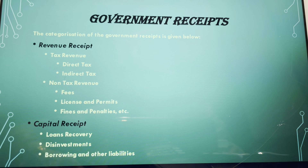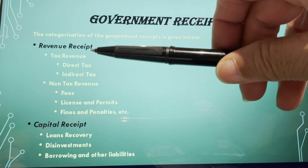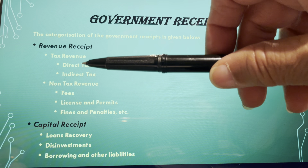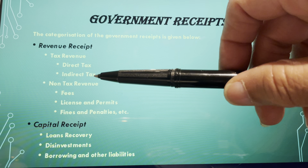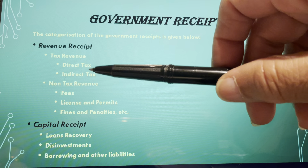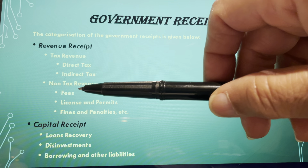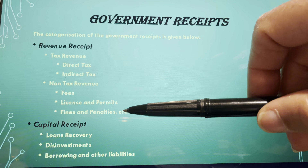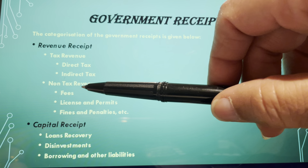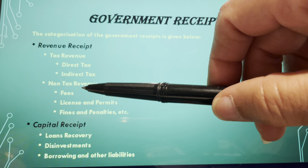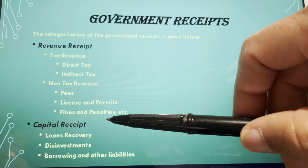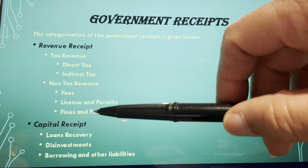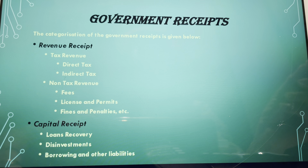Government receipts include revenue receipts, which consist of tax revenue — direct taxes and indirect taxes including GST — and non-tax revenue. Non-tax revenue is not levied on the income of people, but includes fees, license permits, fines, and penalties collected by the government.